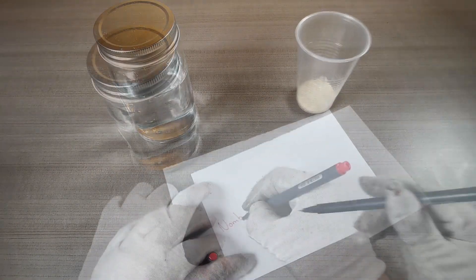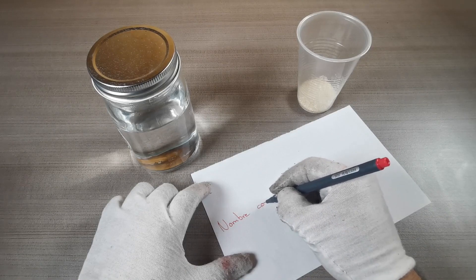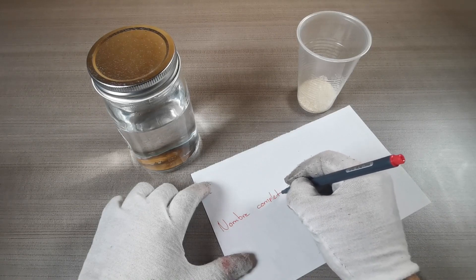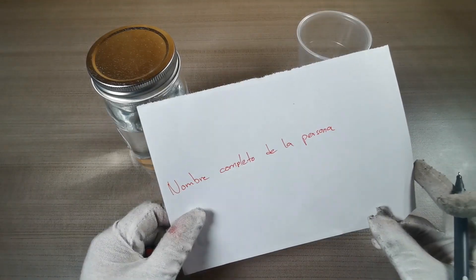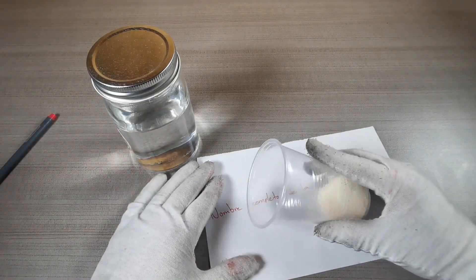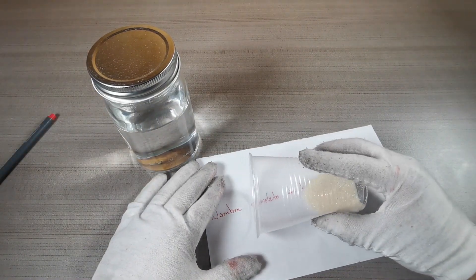Toma la hoja y escribe con el plumón rojo el nombre de la persona que quieres hechizar. Luego de esto vas a poner una cucharada de azúcar sobre el nombre que acabas de escribir.